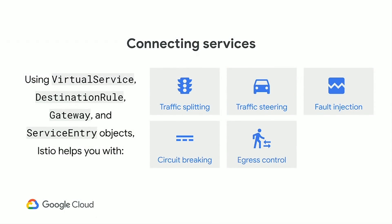For connecting services — operational agility — there are four key networking objects in Istio: virtual services, destination rules, gateways, and service entries. In some combination, they let you do traffic splitting, traffic steering from one version to another, fault injection, circuit breaking, and egress control. Egress control is really powerful if you have services calling external APIs — it's a strong security mechanism. If you deploy a bad Docker image or something gets injected into a container, locking down egress means nobody can make outbound calls unless you've specifically allowed that service, giving you a free perimeter around your deployment.